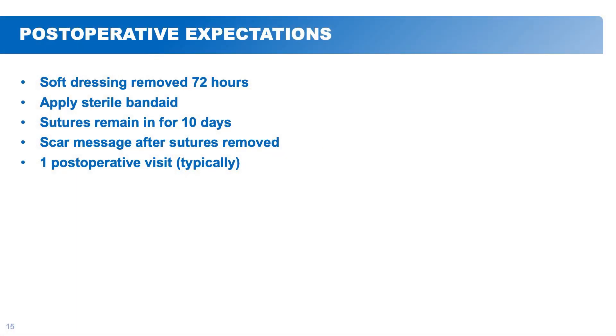What to expect post-operatively for carpal tunnel or trigger fingers: you'll be placed in a soft dressing for 72 hours, after which you can remove it. You're allowed to get the incision wet, but don't soak it. We'll remove stitches at your first post-operative appointment and then have you progress to scar massage to allow tissues to glide more smoothly. Typically only one visit is needed to remove stitches, but if there is stiffness we would refer you to our hand therapy colleagues. Next up, Sandy Stevens will talk about non-operative management and hand therapy.